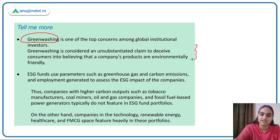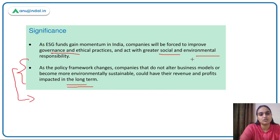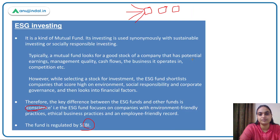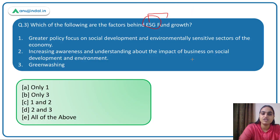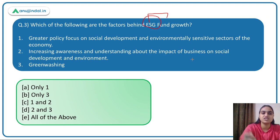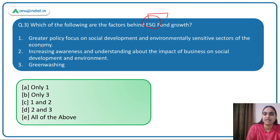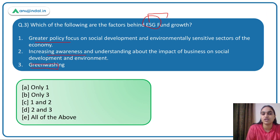Coming back to the question on factors behind ESG fund growth: greater focus on social development and environmental factors, and increasing awareness, are both factors. Greenwashing is not a factor — it is a concern. Therefore, the first and second are factors. The answer is option C.